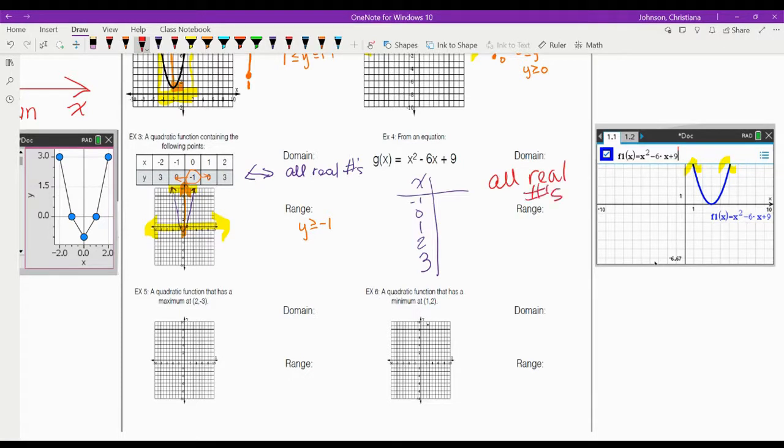So for range, we just needed to see, well, where does it start? Well, it starts at y equals 0 and, again, goes to an arrow. So we have y is greater than or equal to 0.